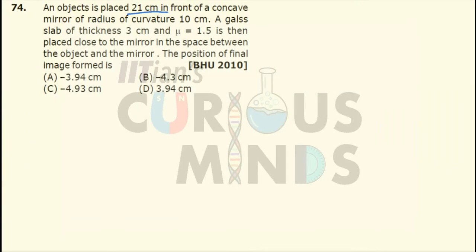An object is placed 21 cm in front of a concave mirror of radius 10 cm. A glass slab of thickness 3 cm and a refractive index 1.5 is then placed close to the mirror in the space between the object and the mirror. The position of the final image formed is.